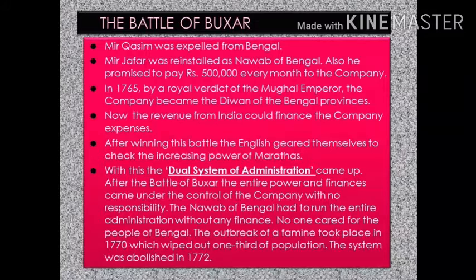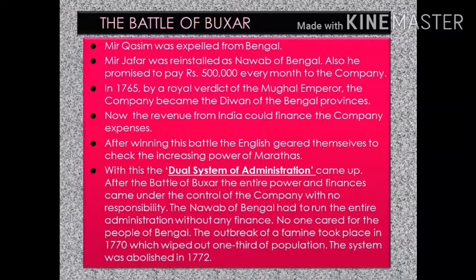Under the dual system, all revenues were with the English, who had no responsibility towards the people of Bengal. On the other hand, the Nawab had no finance to run the administration. In this situation no one cared for the people of Bengal, and there was an outbreak of famine in 1770 in which one third of the population was wiped out. This dual system of administration was abolished in 1772.